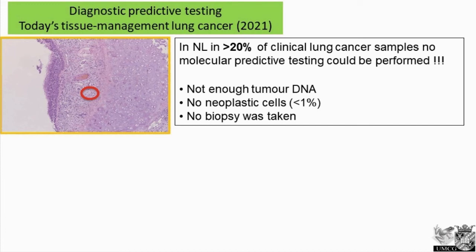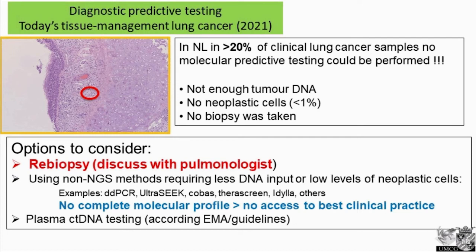This number is increasing when the request for more testing comes up. To solve that, there are three options. One is to discuss the case immediately with the pulmonologist to see whether he can take another biopsy, because having tissue is the best approach to get a complete molecular profile and give the best therapy advice. In many cases this is not possible. We also have non-NGS methodologies that require less DNA or fewer tumor cells. But in the end we will not be able to have a complete molecular profile. The third solution is to use plasma liquid biopsies, like plasma cfDNA testing.